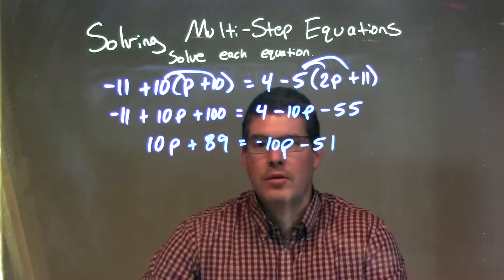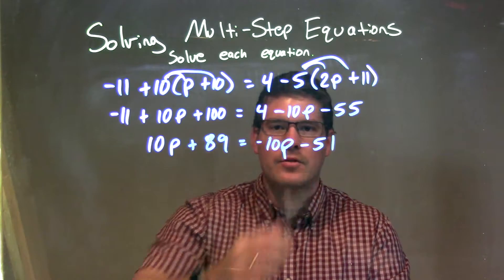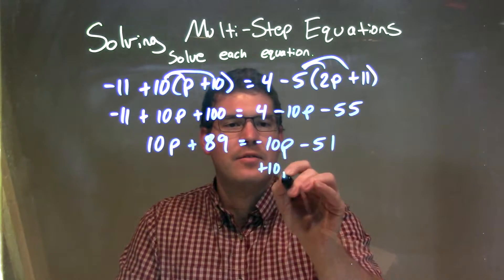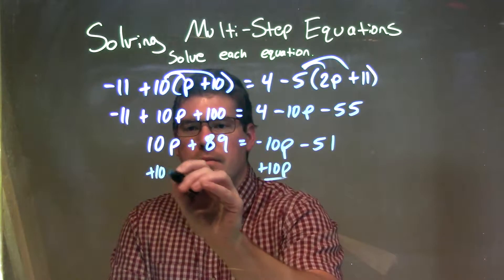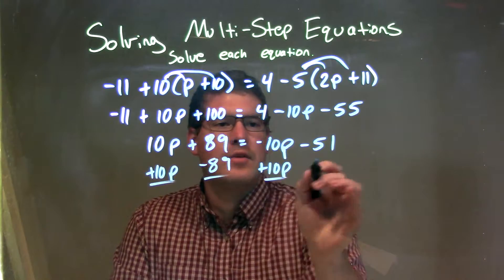Now let's bring our like terms together. Let's bring our variable p to the left and our numbers to the right. I'm going to add 10p to both sides and subtract 89 from both sides.